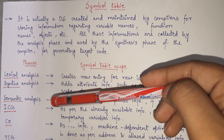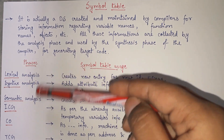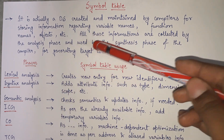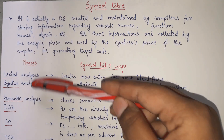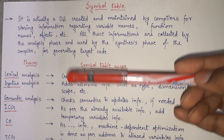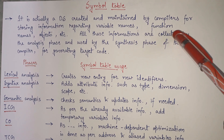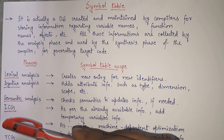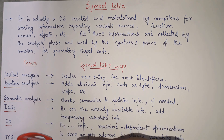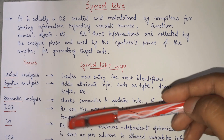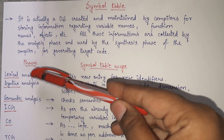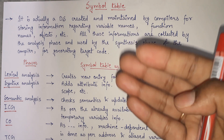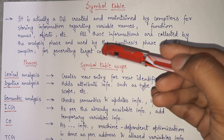There are mainly six phases of compiler. Among the six phases, the first three — lexical analysis, syntax analysis, and semantic analysis — are particularly known as the analysis phase of the compiler. All the information in the symbol table is collected by these three phases. The information stored is then used by the synthesis phase — the remaining three phases: intermediate code generator, code optimization, and target code generation — which use the information from the symbol table to generate the ultimate target code.